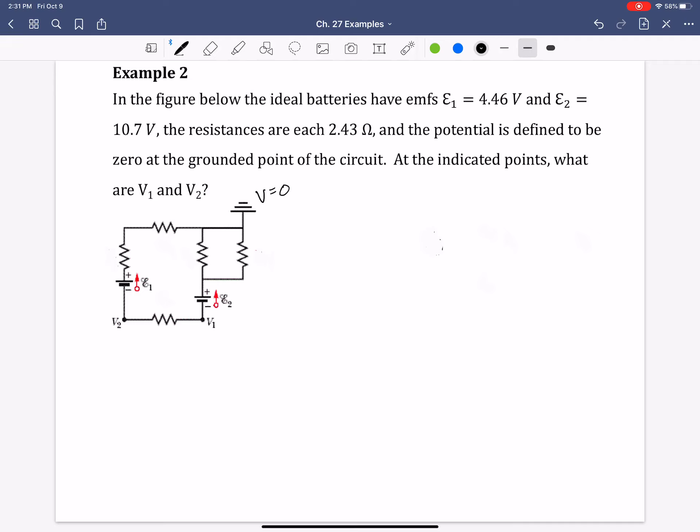So anytime you see that three-bar symbol that's like a pyramid, that means ground. This circuit is connected to a ground, which is another way of saying it's kind of like an infinitely large reservoir or sink to dump the charges.